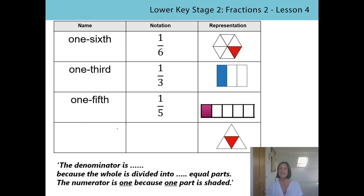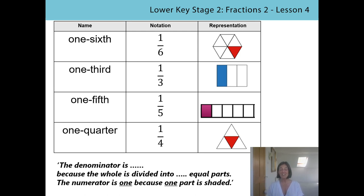And finally, how many equal parts is the whole divided into? The denominator is going to be four because the whole is divided into four equal parts. Can you remember the name for fractions where the whole is divided into four equal parts? It's one quarter. And of course the numerator is one because only one part is shaded. Fantastic! Did you manage to get all of those? Don't worry if you didn't - so long as you've listened and understood what you could have written, then you're learning, which is great.